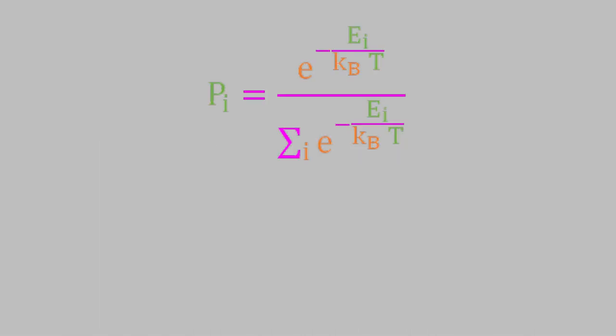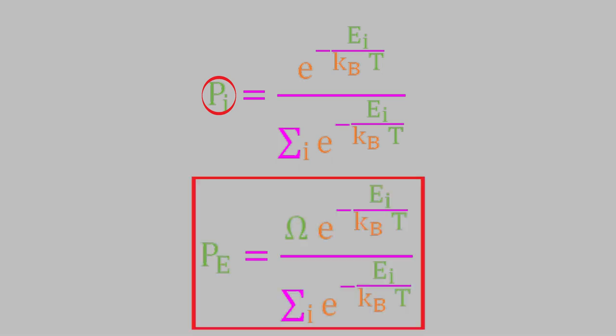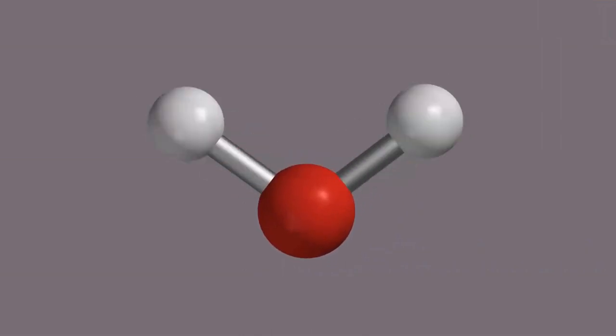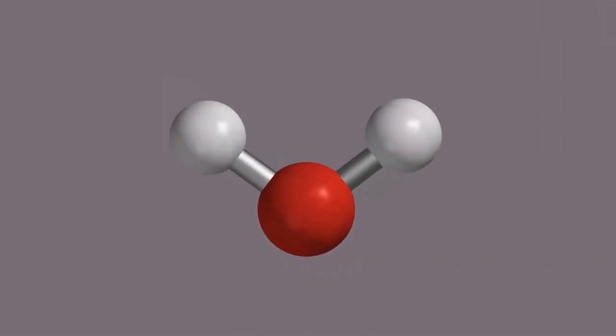Before we finish up, let's look at this equation one last time. This tells us the probability that the system is in microstate i. However, we usually don't know the microstate a system is in — we'd usually rather know the probability that the system has a particular energy E, not a particular microstate. To calculate that, we just need to modify this equation slightly by including the degeneracy of the microstate in the numerator. That's enough new material for now. We now know the probability that a system will have a given energy, but one thing we don't know yet is how that energy will be distributed among the different forms of motion: rotational, vibrational, and translational. That's what we'll look at in the next video. I hope you'll join me for that, and have a good week.